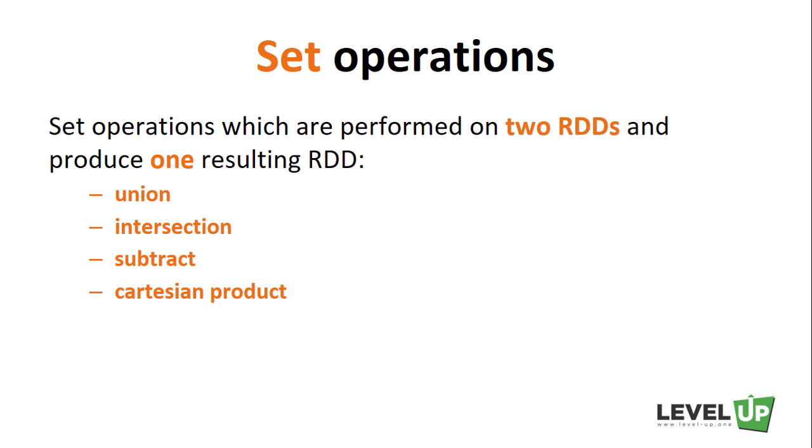There are some set operations which are performed on two RDDs and produce a resulting RDD from those two RDDs. Some popular ones are Union, Intersection, Subtract, and Cartesian products. It's important to note that all of these operations require that the RDDs being operated on are of the same type.